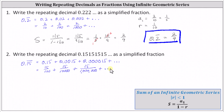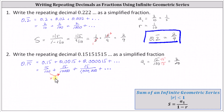Again, we have an infinite geometric series where A sub one, the first term, equals fifteen hundredths, which we can simplify. It has a common factor of five, so fifteen hundredths simplifies to three twentieths. Now to determine the common ratio R, focusing on the denominators, notice that fifteen hundredths times one hundredth equals fifteen ten-thousandths, and fifteen ten-thousandths times one hundredth equals fifteen millionths. So the common ratio R equals one one-hundredth.